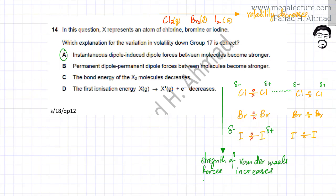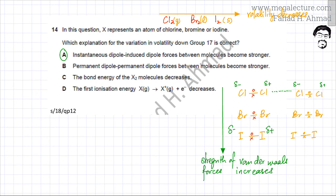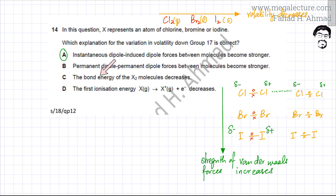Option B refers to permanent dipole–permanent dipole forces, but these are non-polar molecules with no permanent dipoles, so this is incorrect. Option C states that bond energy of the X₂ molecule increases, but volatility and boiling points depend on intermolecular forces between molecules, not the strength of the bond within the molecule — so bond energy is irrelevant. Similarly, ionization energy is completely irrelevant; volatility only depends on the attractive forces between molecules.